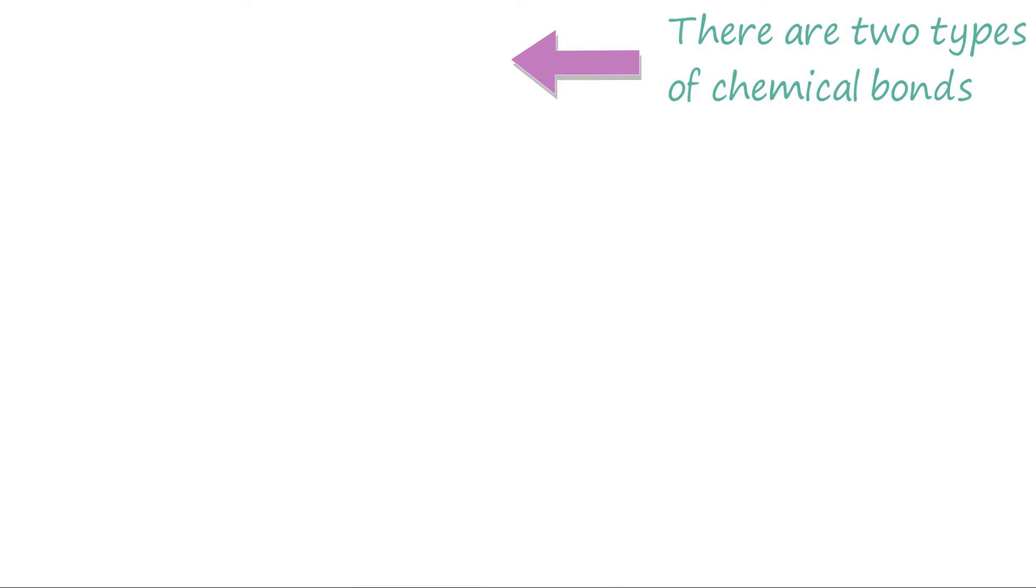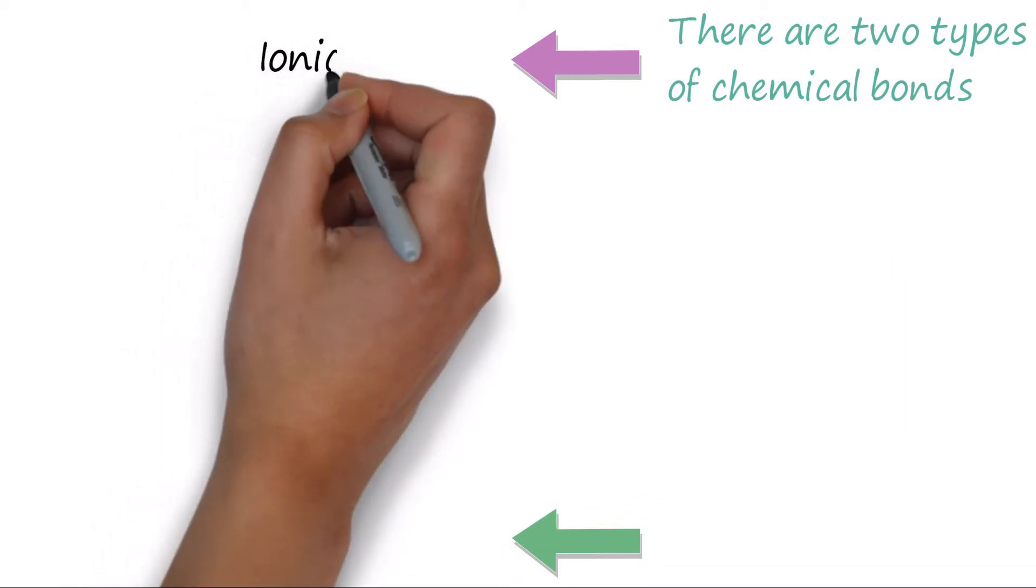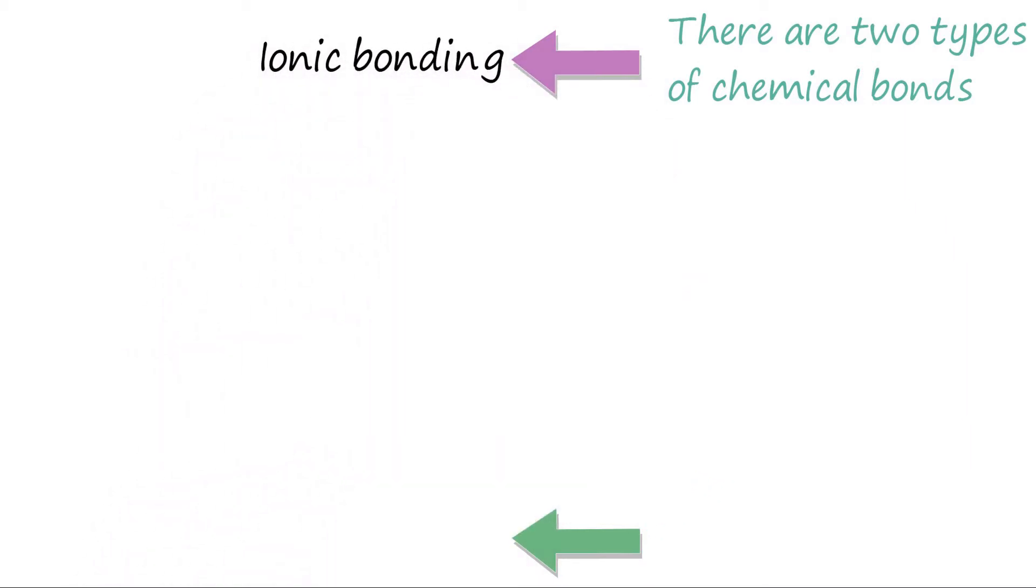You take this information without question. Why would you? The chemistry teacher just told you it's true. Let's have a deeper look into chemical bonds. Here we have them, the only two types of bonds to exist: Ionic and Covalent, as our chemistry teacher just said.